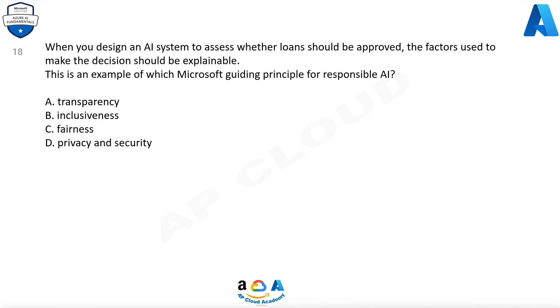Question 18. When you design an AI system to assess whether loans should be approved, the factors used to make the decision should be explainable. This is an example of which Microsoft guiding principle for responsible AI? A. Transparency. B. Inclusiveness. C. Fairness. D. Privacy and security.